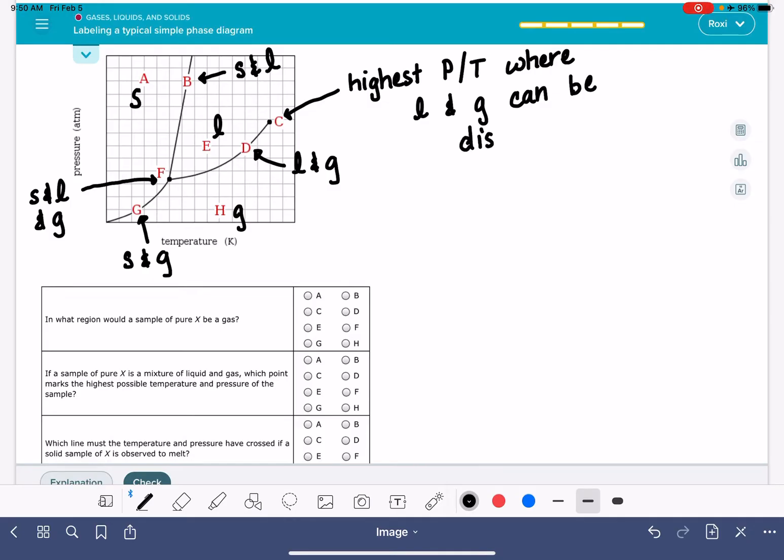Notice that the line stops at point C. So what this means is that if you have a temperature that is above the critical temperature, there is no differentiation between the gas state and the liquid state up in this particular area. So this is the highest point where we can distinguish them from each other.